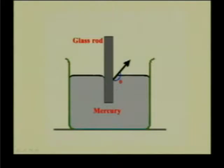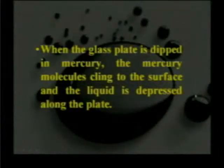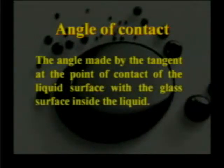Now consider the case of mercury. If you dip a rod in mercury, the surface will be curved downwards as shown in the diagram. Here the angle of contact will be more than 90 degrees — an obtuse angle. When the glass plate is dipped in mercury, the mercury molecules cling to the surface and the liquid is depressed along the plate. So for water and glass, the molecules rise up; for mercury and glass, they go downwards.